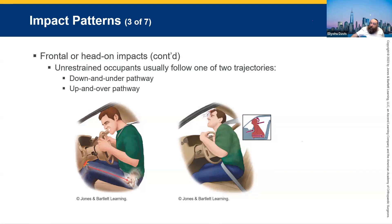With up and over, we're very concerned about the head hitting the windshield. There can still be lower leg injuries, even abdominal injuries. Patients can be ejected from the car through the windshield if they're not wearing proper restraints.